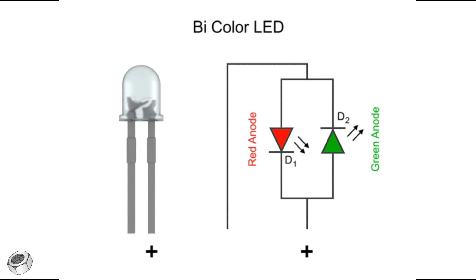If a positive voltage is supplied to the green anode, then the green LED lights. If positive voltage is supplied to the red anode, then the red LED lights.